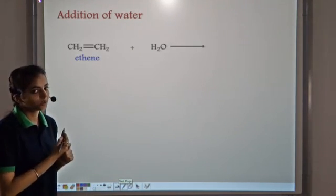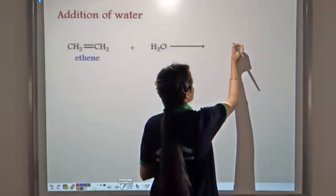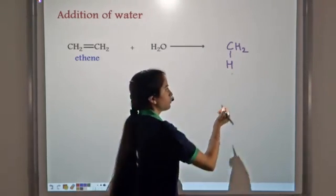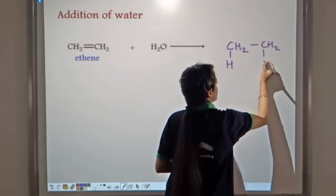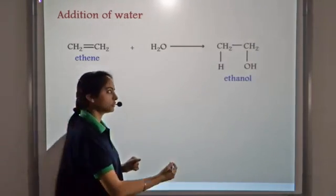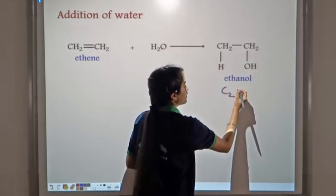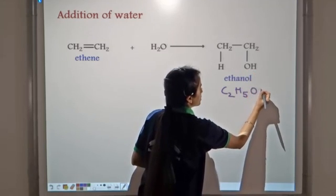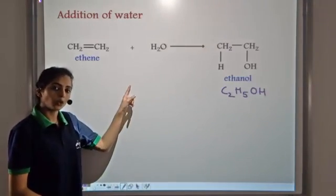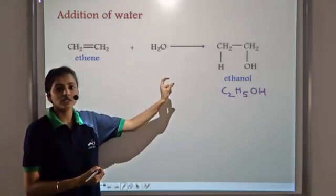Let's take the example of ethene reacting with water. Water is made up of H and OH. The hydrogen atom attaches itself to one carbon atom and the OH of water attaches itself to the other carbon atom. The product is ethanol — C2H5OH — because the four hydrogen atoms remain and we gain the OH group.